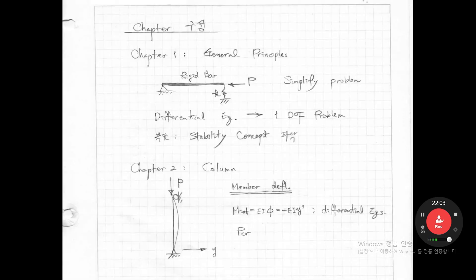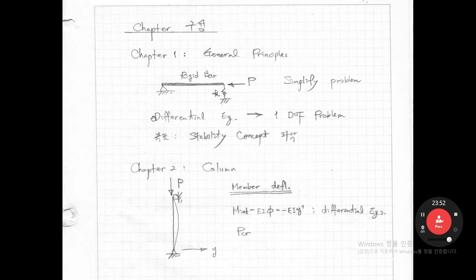I'd like to overview the six chapters of our course. In chapter one, we consider a rigid bar — meaning there is no deformation in the member — and we consider only one spring, with deformation only in the spring. We regard the member as rigid to make the problem simple and understand the basic concept. So in chapter one, we simplify this into a one-degree-of-freedom system.